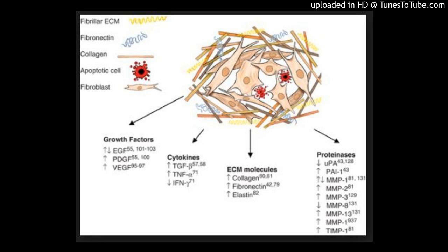The Mechanisms of Beta-Catenin on Keloid Fibroblast Cells Proliferation and Apoptosis, by Gianni, via European Review of Plastic Surgery. Objective: to investigate the role of Beta-Catenin siRNA on proliferation and apoptosis of keloid fibroblast cells.